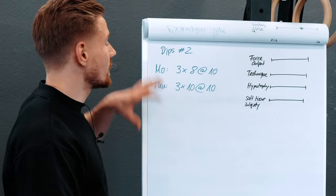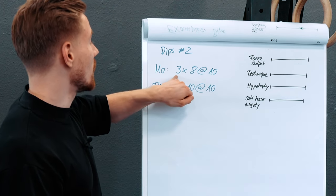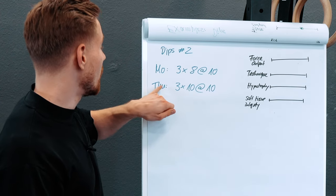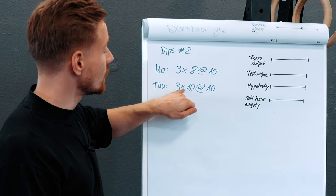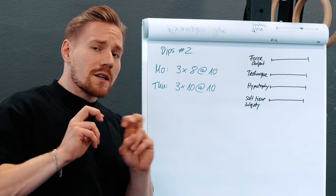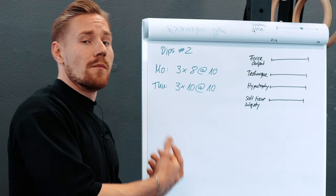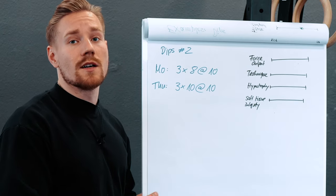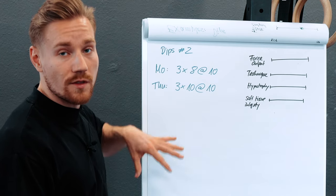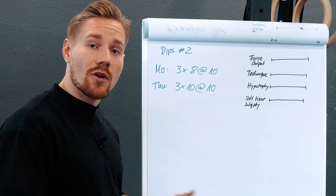Second example — the other extreme. We're still training dips twice a week, but this time Monday is three times eight repetitions at max effort, and Thursday is three sets of ten repetitions at maximum effort. This is a pretty bodybuilding-oriented style of training — hypertrophy driven, going max effort with more moderate rep ranges, so the absolute load on the belt is a bit lower.